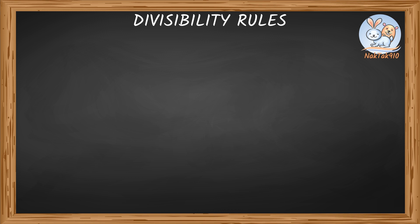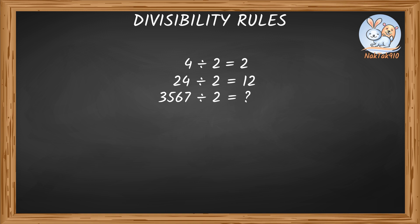What are divisibility rules? Tell me if 4 is divided by 2. 4 divided by 2 is 2. How about 24 divided by 2? That's 12. How about 3,567 divisible by 2? Hmm, that takes a while to figure that out. Exactly. So here come divisibility rules.